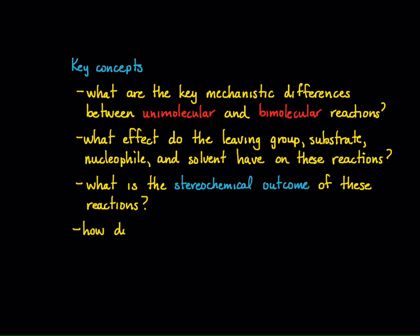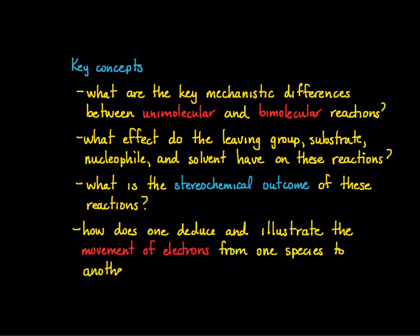And lastly, how does one deduce and illustrate the movement of electrons from one species to another? Again, we're going to be thinking about good curved arrow notation and the concept of curved arrow notation. So this is what we're going to have to look forward to in Chapter 7. And let's begin.